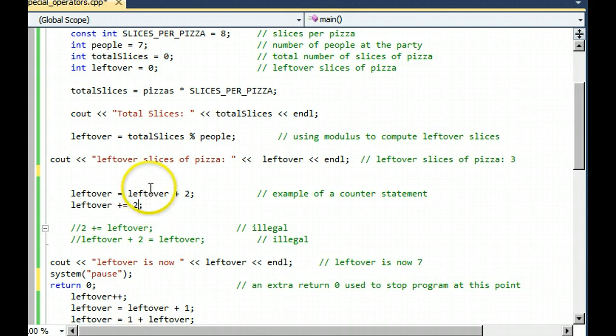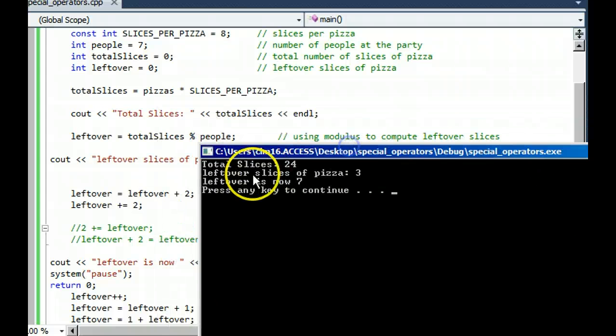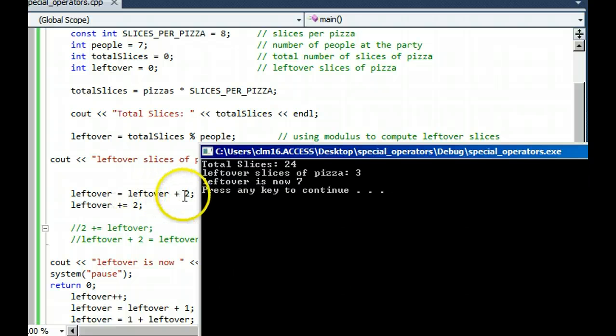So effectively, we have now taken the value three that was stored in leftover, and we've added two to it to make it five and then two more to make it seven. So let's all run the program and see if leftover is indeed the value seven. And I have errors. So now we run the program.